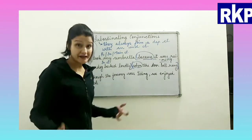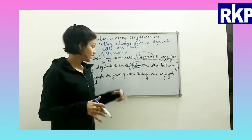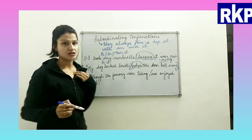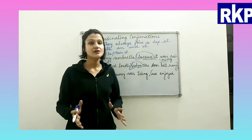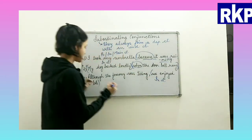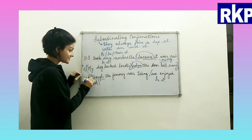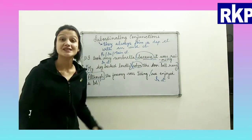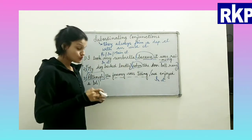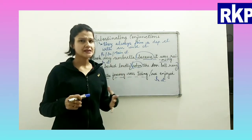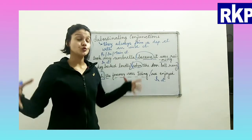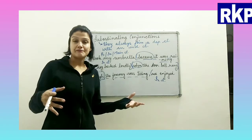Third sentence: 'Although the journey was tiring, we enjoyed a lot.' 'We enjoyed a lot' is the independent clause. 'Although the journey was tiring' starts with a subordinating conjunction — 'although.' So I hope you have understood what a subordinating conjunction is and how it is used to join dependent and independent clauses. There are many different types of subordinating conjunctions and we'll look at each one of them.